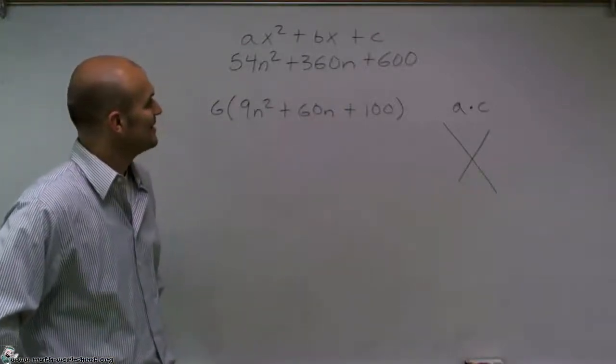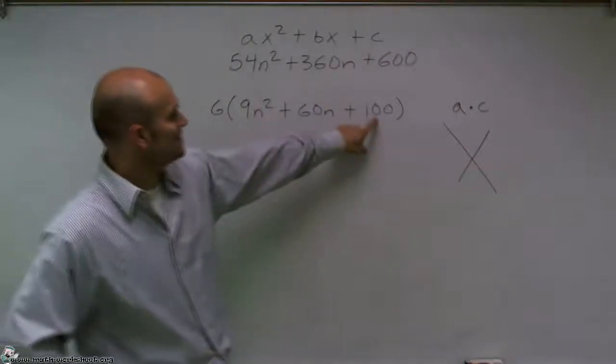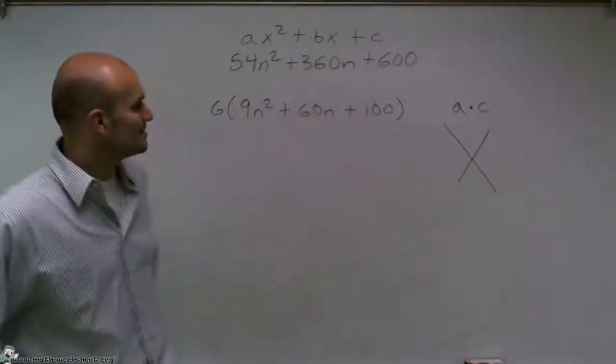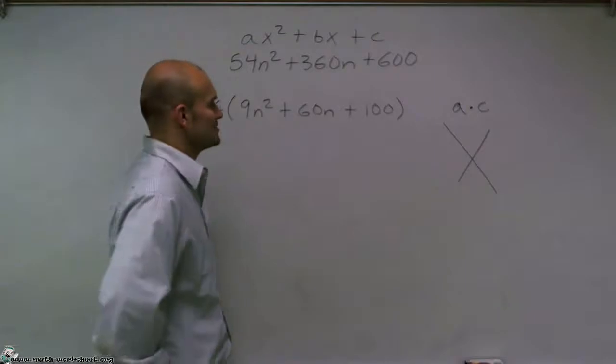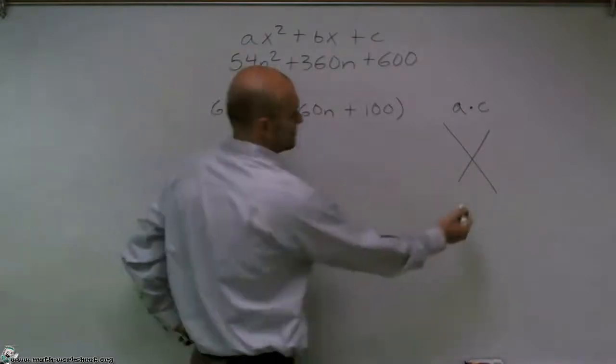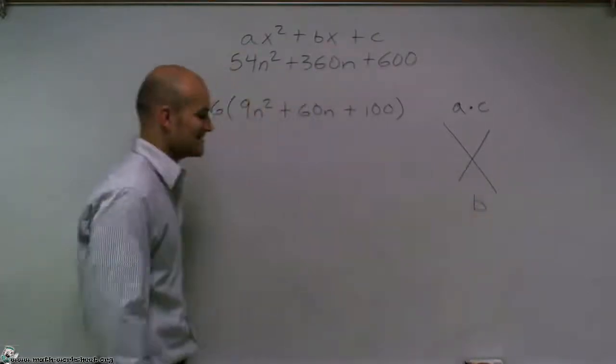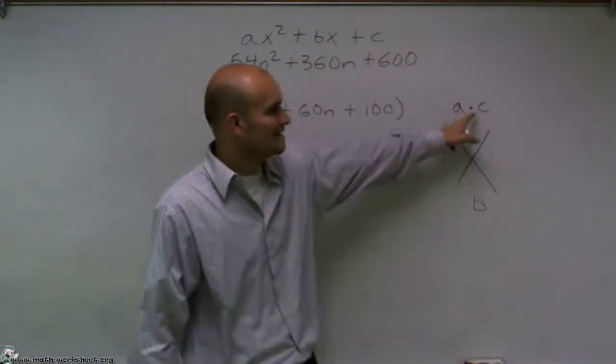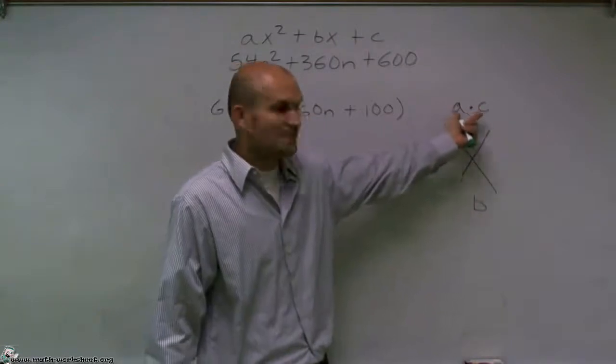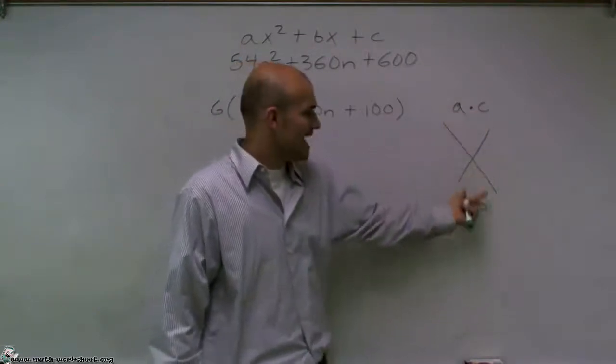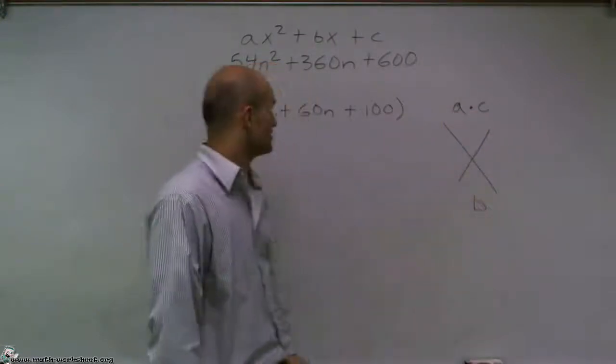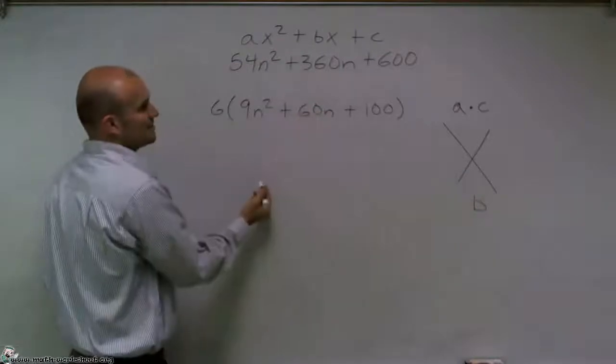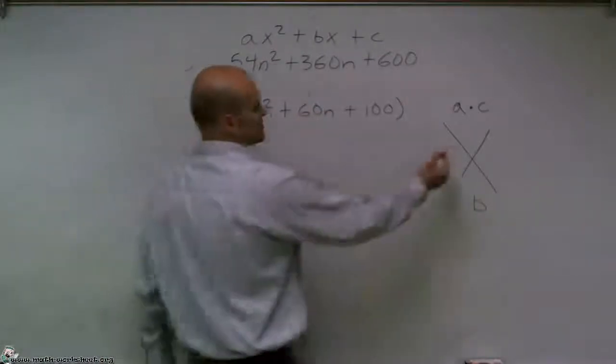What two numbers multiply to give you c and then add up to give you b. So it's going to be a times c, and then b will be my middle term. So all it is is what two numbers multiply to give you a times c but then add up to give you our b term. So our b term here is going to be 60, and our a times c term is going to be 900.